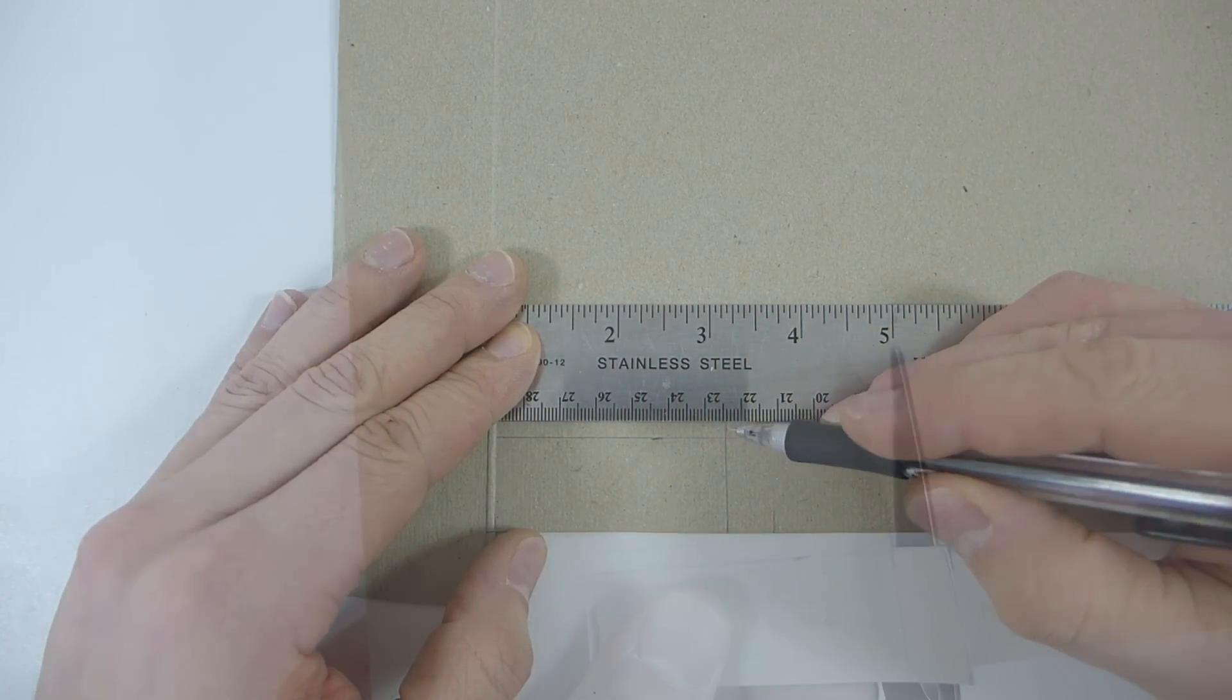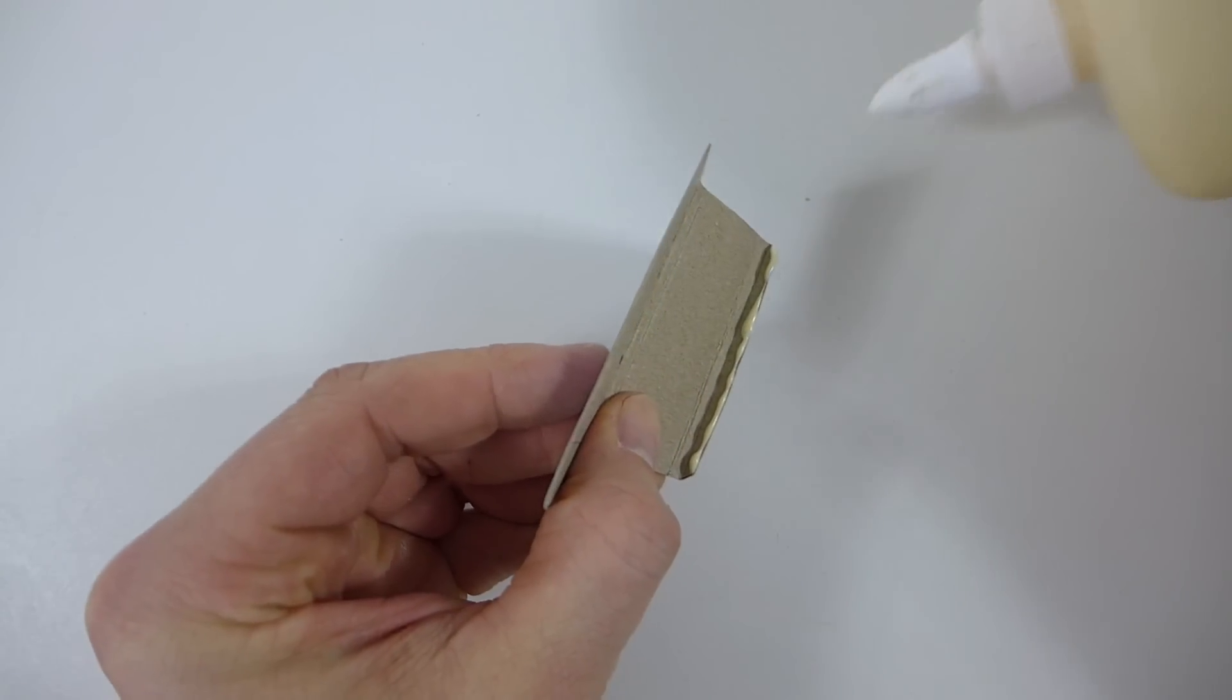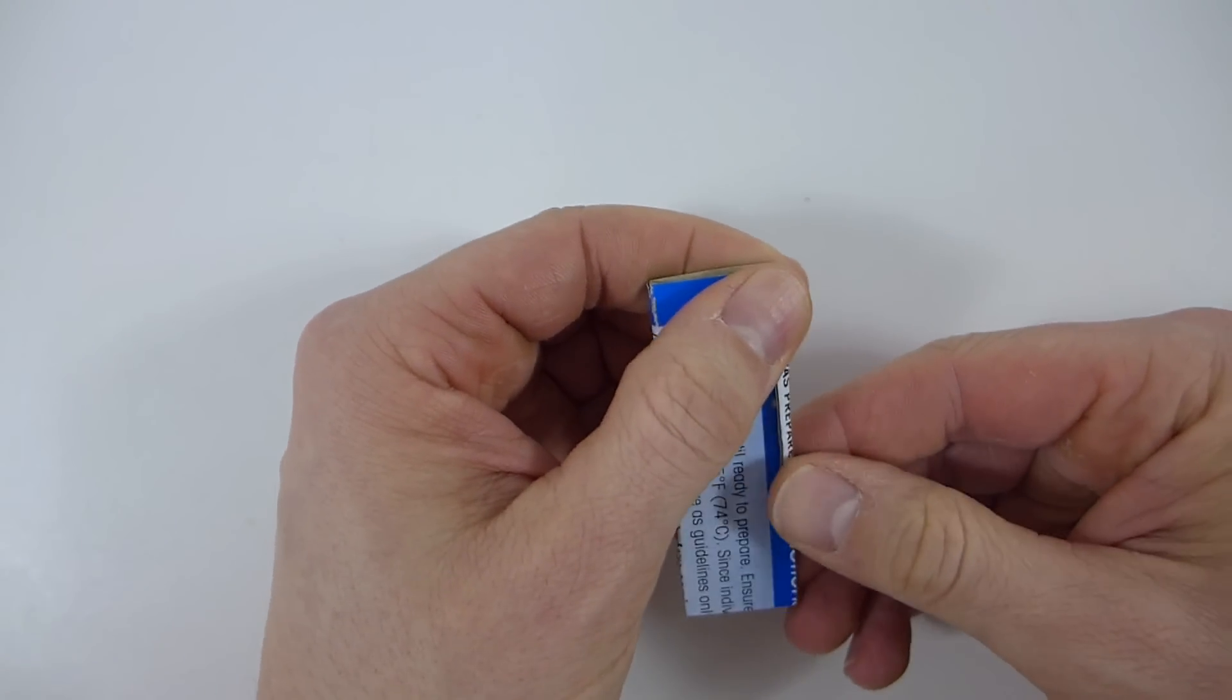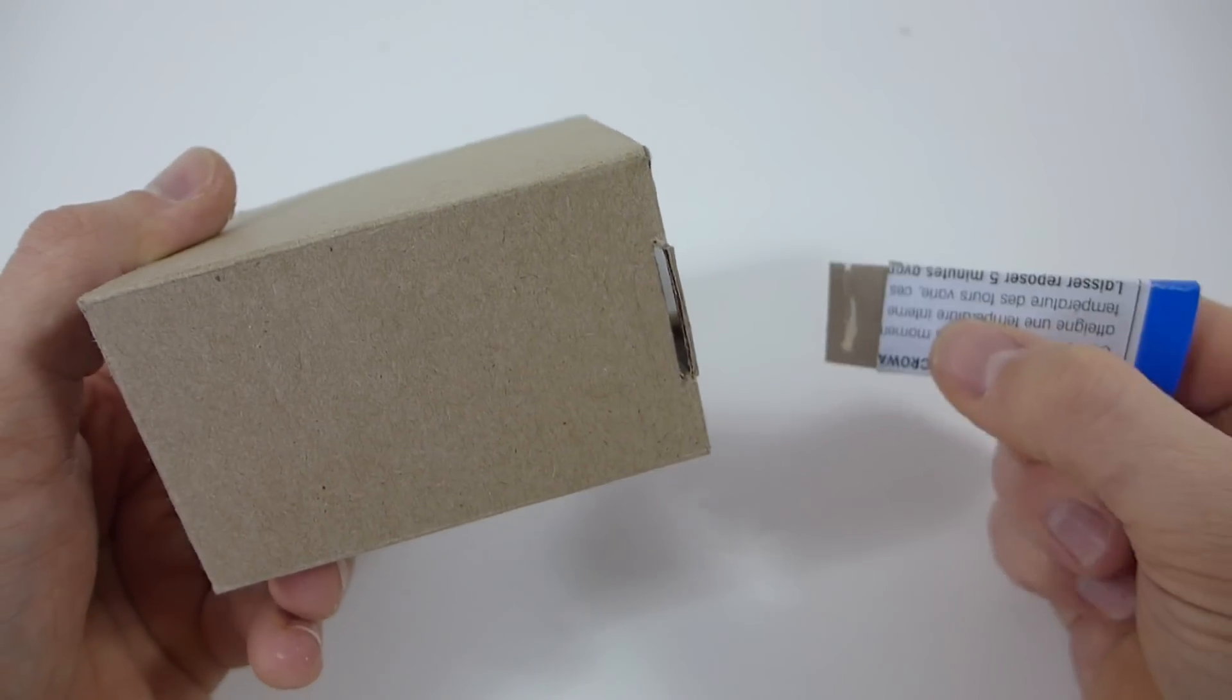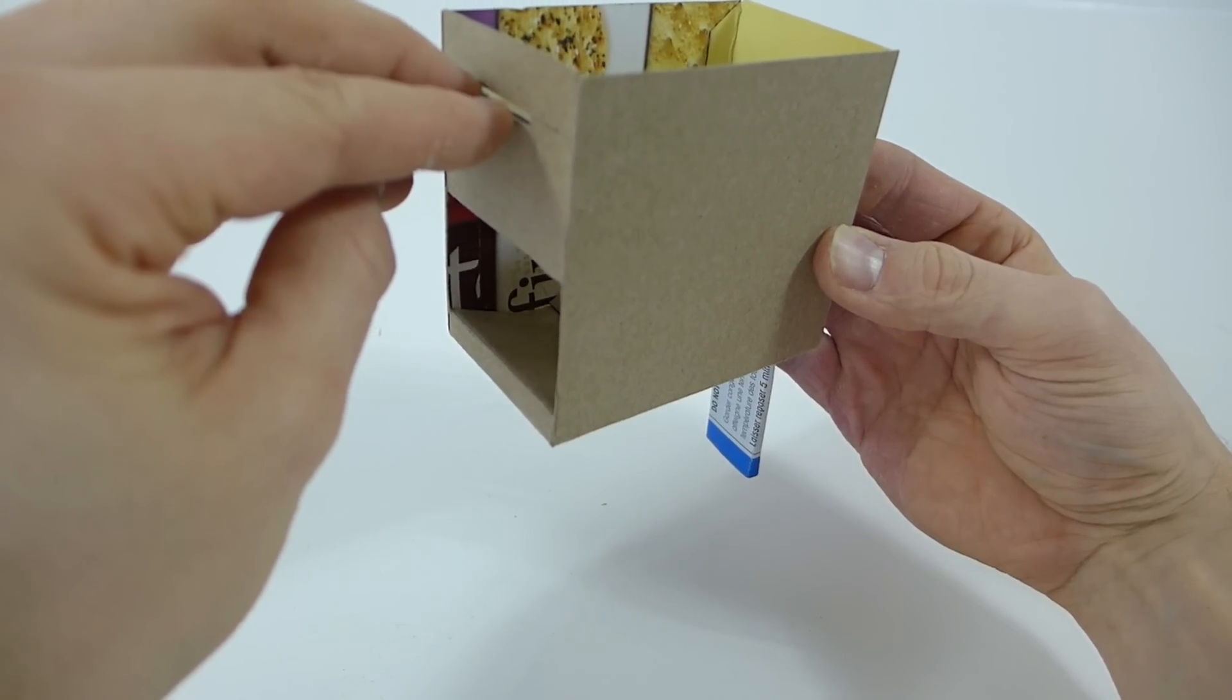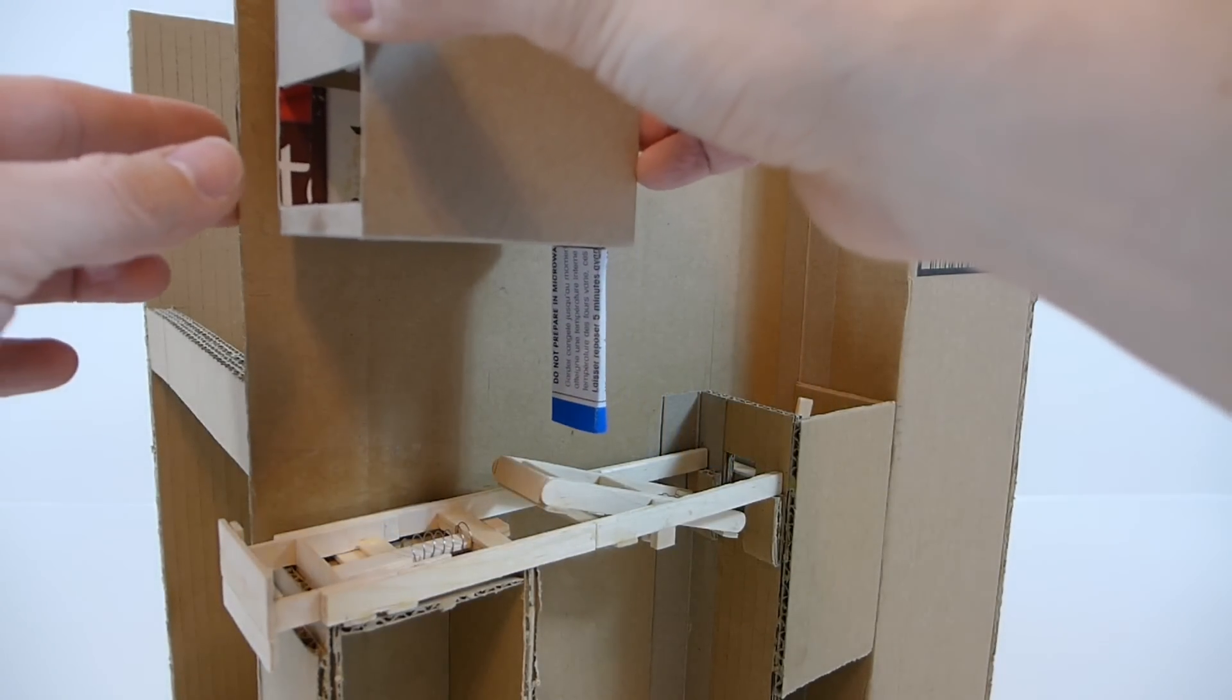Now we'll add a coin shoot to the coin rejection box. Glue your box flush with the front edge.